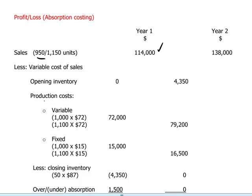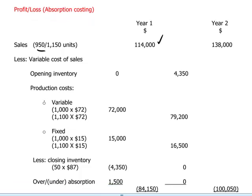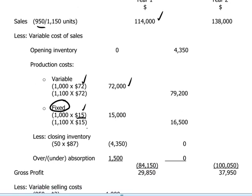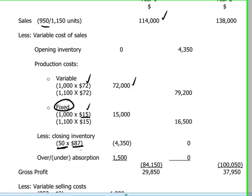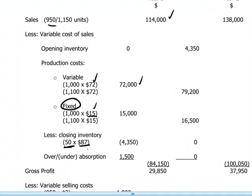In the cost of sales we now include both the variable and the fixed cost of sales. Opening inventory is zero; production costs are variable at $72 as before, and we can see the $15 fixed overhead per unit represented in our production costs. Closing inventory uses the same unit reconciliation as before, but this time it is valued at $87 — the full absorbed cost of production, being $72 plus $15.